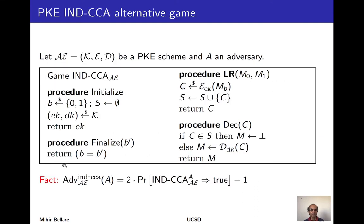Just like for the CPA case, we can formulate IND-CCA through a single game. We fix our scheme and consider one game that performs the same modification as in the CPA case: the choice of left or right is given by a bit chosen in the game. The decryption oracle is exactly the same as in the left-or-right games with the same bookkeeping and non-triviality checks. The adversary outputs its guess and the fact is that the advantage can be recaptured as twice the probability this game returns true minus one.